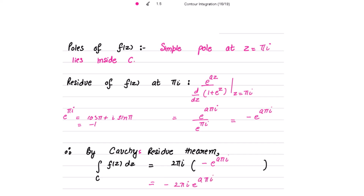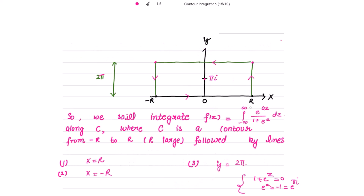Now we split the contour into its four parts: from −R to R along the real axis, then from R up the vertical line to height 2π, then from R to −R along y = 2π, then from −R back down to the starting point.